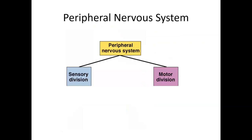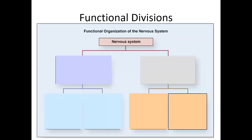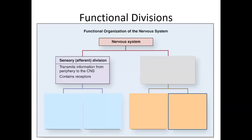Let's focus on the peripheral nervous system for a minute. It can be divided into the sensory division — the other term for this would be afferent — or the motor division, also called the efferent division. Functionally, the sensory division is what's taking information towards the central nervous system. We have sensory receptors all throughout our body, not only in the skin but also on some of our organs. We also have sensory receptors in our muscles and in our tendons, transmitting information towards the brain and the spinal cord.